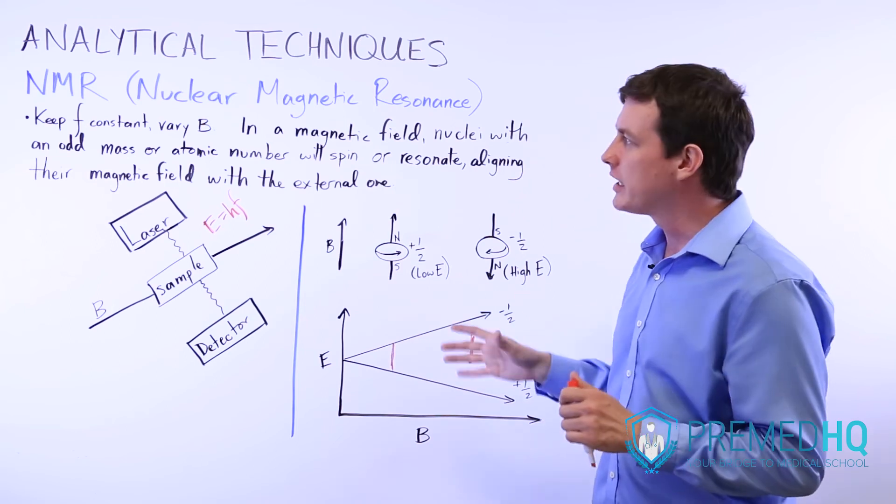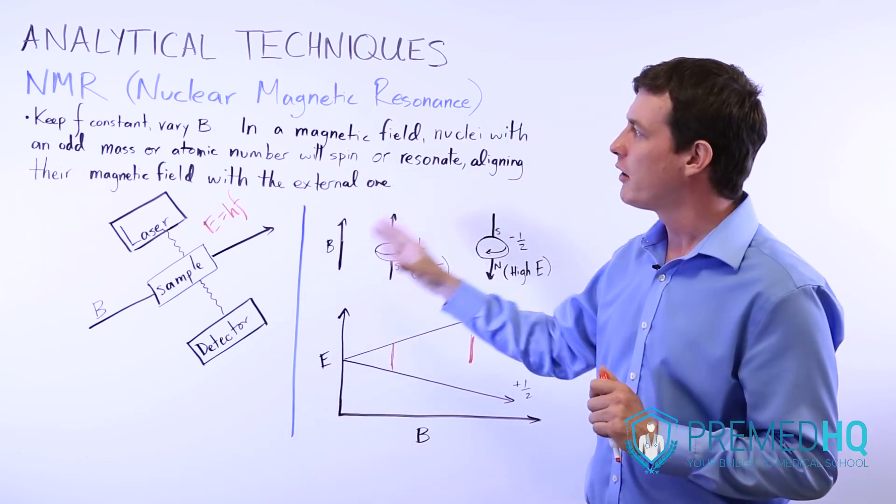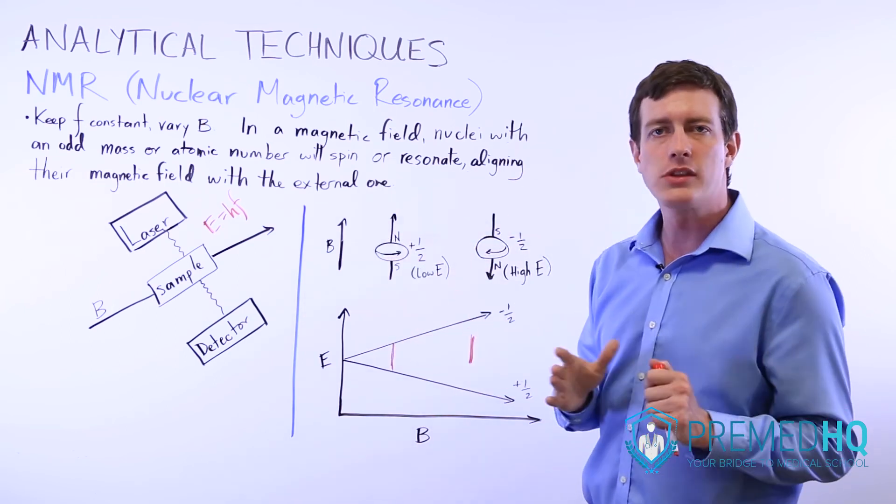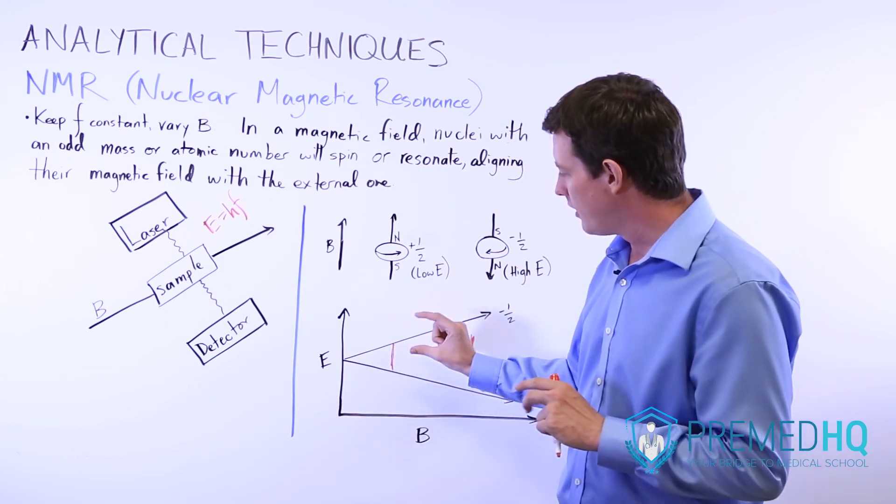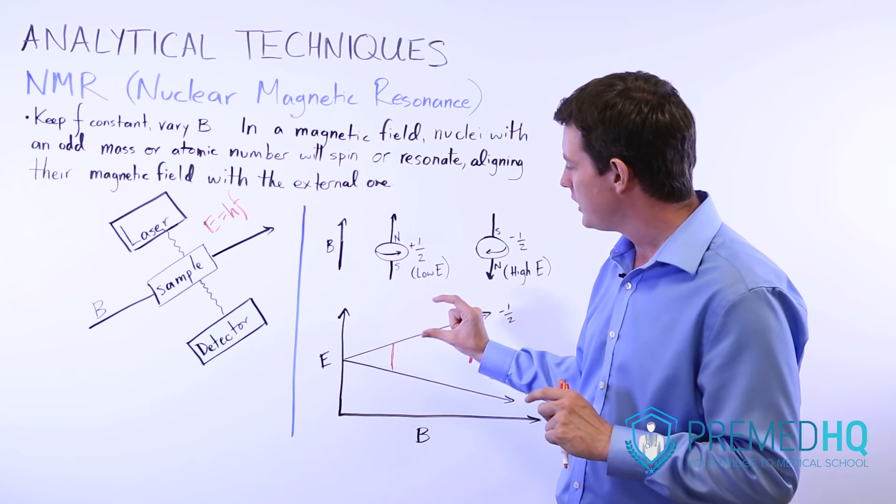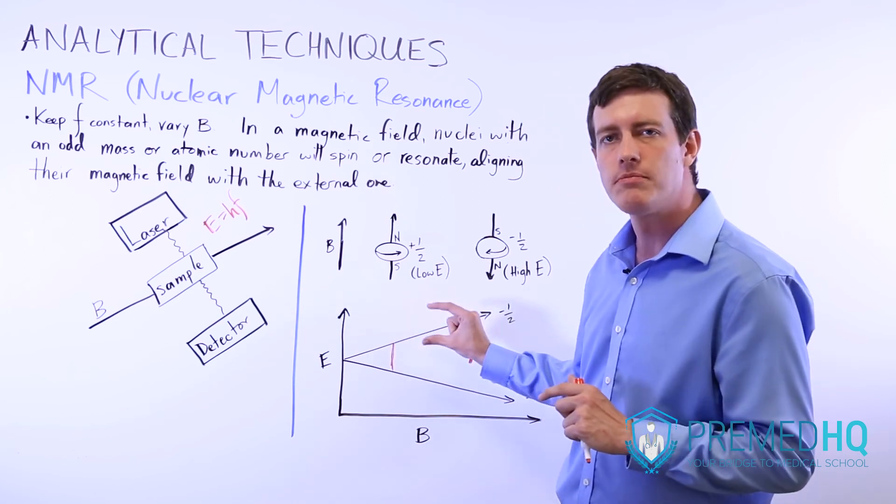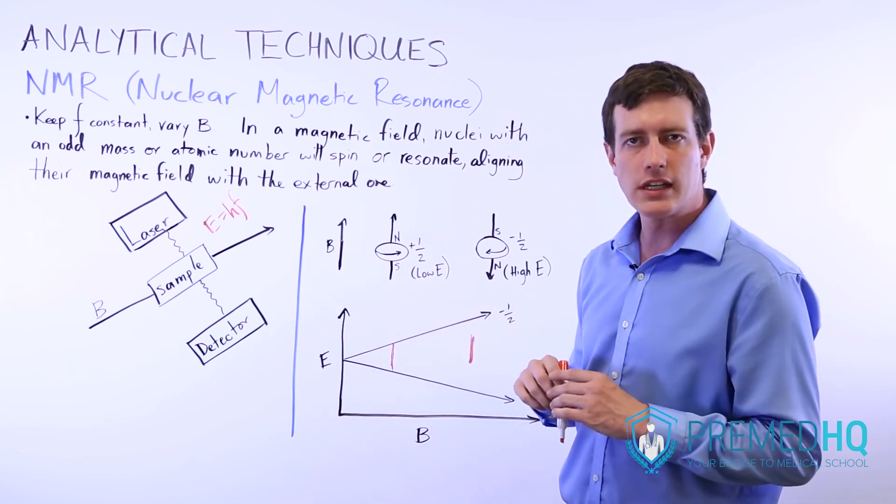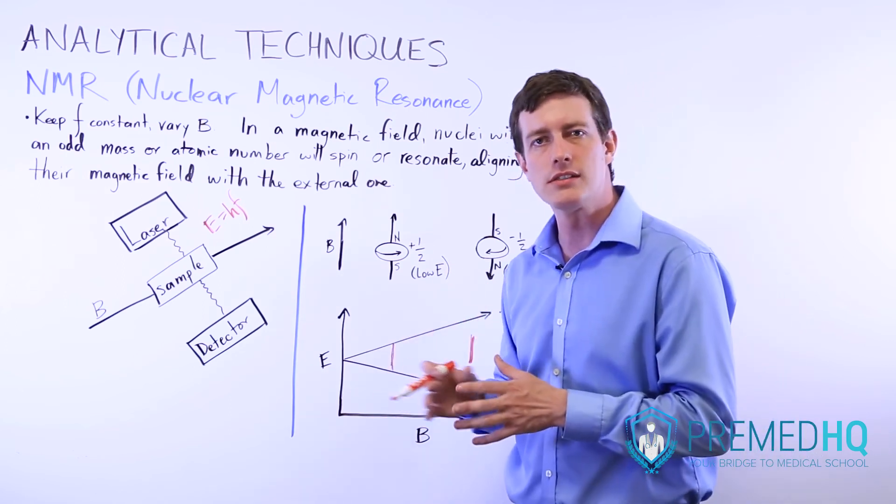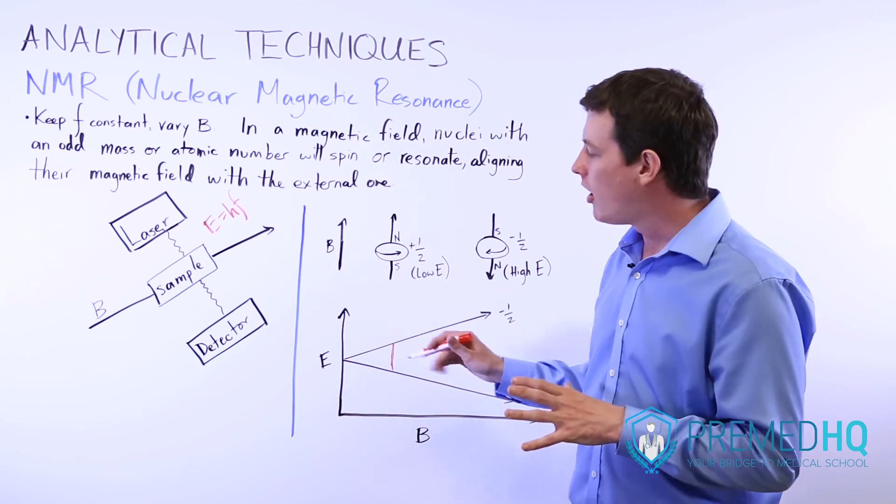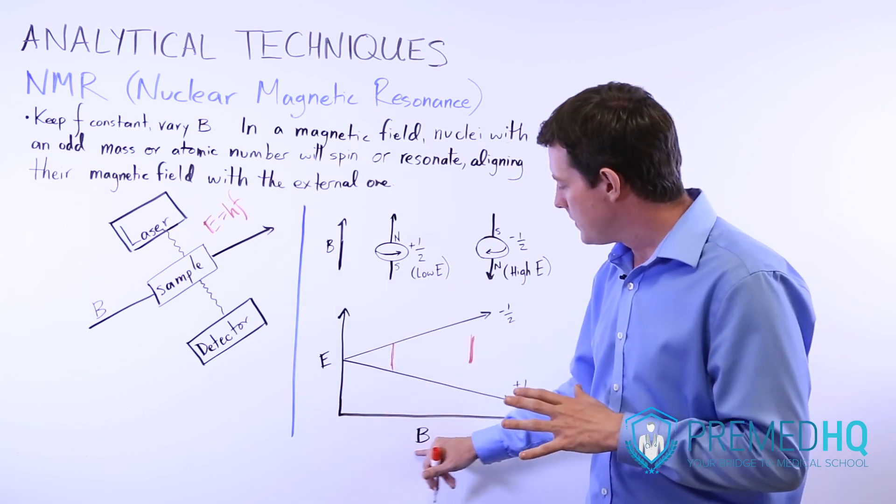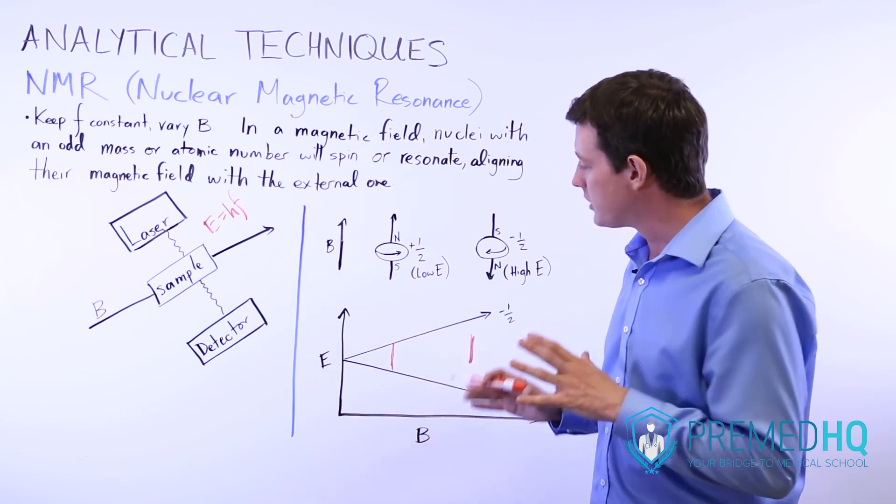And then when we get to NMR plots we'll go through how to analyze those and how the characteristics of the exact magnetic field where the laser's energy is sufficient to cause that flip—we'll look at how the surrounding conditions like the number of neighboring protons and spin-spin splitting and other components cause this magnetic field amount to change.